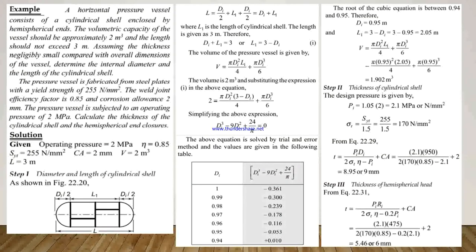Now we see one example related to that — a horizontal pressure vessel. The pressure vessel consists of a cylindrical shell enclosed by hemispherical ends. The volumetric capacity of the vessel should be approximately 2 cubic meters and the length should not exceed 3 meters. Assuming the thickness is negligibly small compared with the overall dimensions, determine the internal diameter and the length of the cylindrical shell. The vessel is fabricated from steel plates with yield strength of 255 N/mm² and weld joint efficiency factor of 0.85, corrosion allowance of 2 mm, and subjected to an operative pressure of 2 MPa. Calculate the thickness of the cylindrical shell and the hemispherical end closures.